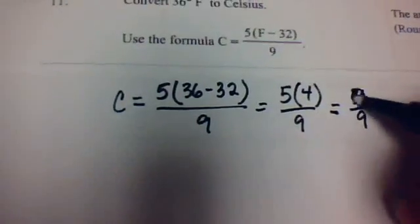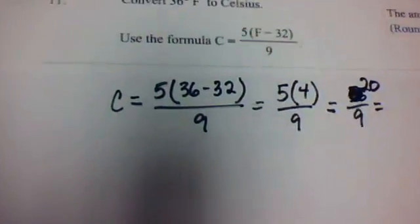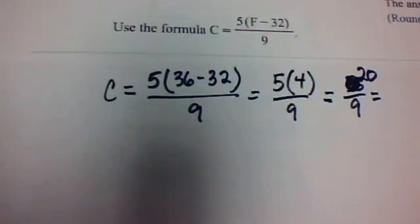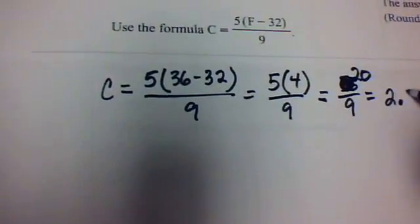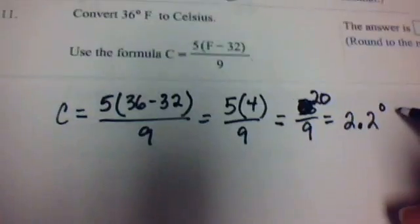I'm sorry, 5 times 4 is 20, so it's 20 divided by 9, not 36, which will be 2.2 degrees Celsius.